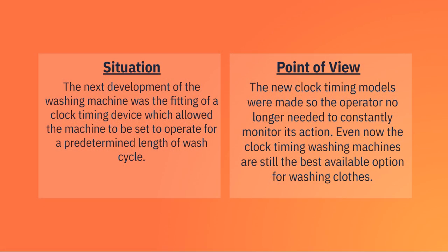For the context, the next development of the washing machine was the fitting of a clock timing device, which allowed the machine to be set to operate for a predetermined length of wash cycle. Under the point of view, the new clock timing models were made so the operator no longer needed to constantly monitor its action. Even now, the clock timing washing machines are still the best available option for washing clothes.